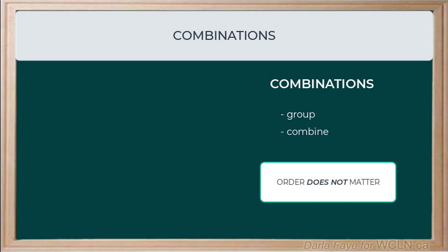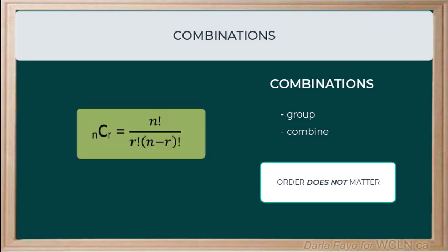When we calculate the number of possible combinations, we use this equation. So, it's nCr equals n factorial divided by r factorial multiplied by the difference between n and r factorial. I like to read nCr as n choose r. N still represents the total number of objects that we have to choose from. And r represents the number of objects that we will select or combine or choose to be in a group.